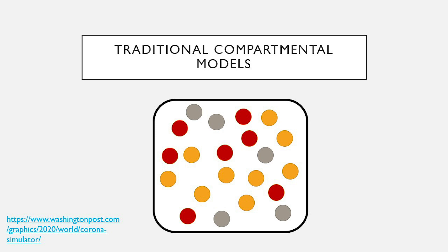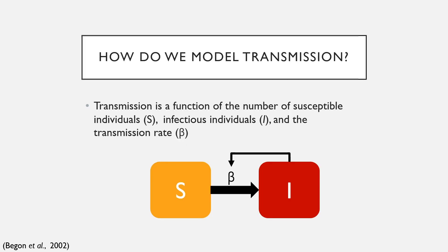Think of individuals in orange as being susceptible, while the red ones are infected, and the gray ones are recovered. The Washington Post has a really great graphic simulator where they show this in action, and also the effect of what happens when some of these molecules stop moving — which is basically a proxy for social distancing.